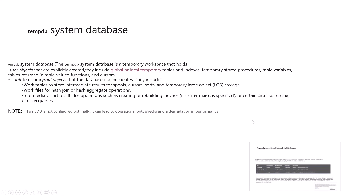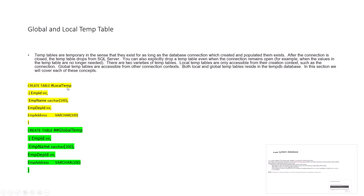This video is about the tempdb system database, which is an important SQL Server database. It is a temporary workspace that holds user objects created explicitly. For example, global or local temporary tables use the tempdb database. To create a local temporary table, put a number sign (#) in front of the table name, and a double hash sign (##) makes it a global temporary table.